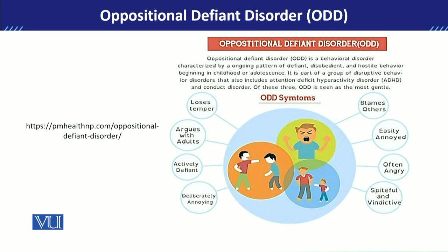Oppositional Defiant Disorder is a behavior disorder which is characterized by defiant, disobedient, and hostile behavior, which usually manifests during childhood or adolescent age. When we say Oppositional Defiant Disorder, we are discussing the externalizing behavioral disorder — those behavior disorders which are destructive in their nature. ODD के बच्चे होते हैं जिनको यह problem होता है।